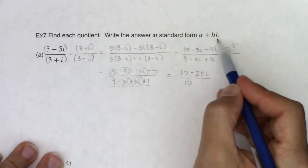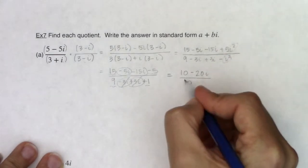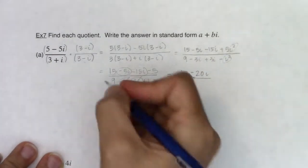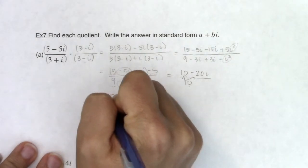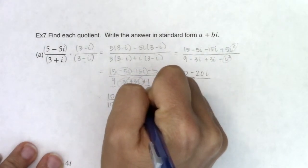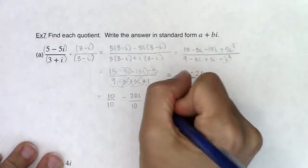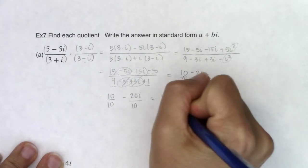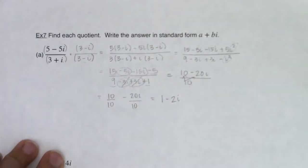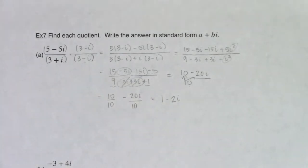Now, I still haven't quite finished this problem off. I need to use my little alien errors and simplify this. So this is 10 over 10 minus 20i over 10. These are going to cancel or simplify to 1. 20 over 10 is 2, so I have 1 minus 2i. And I am now in standard form, a plus bi.